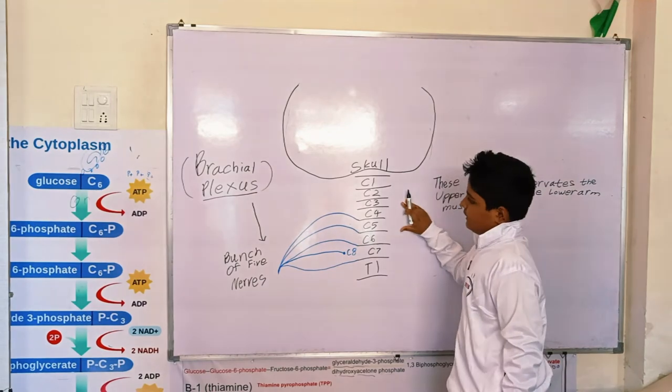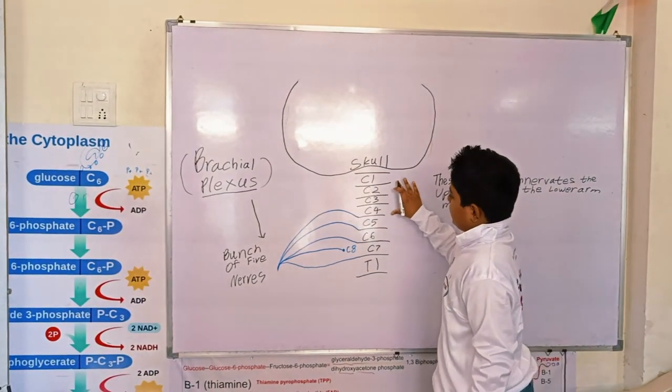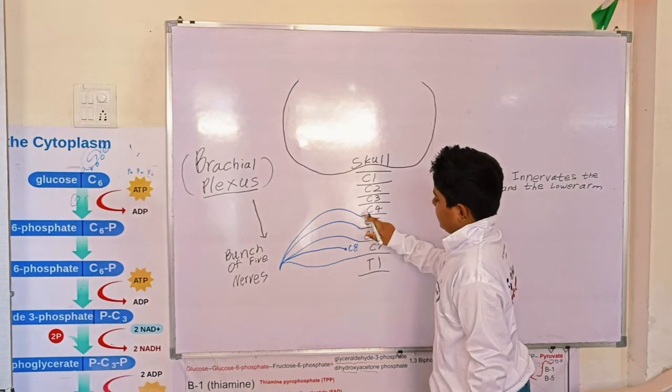So now we have learned what is brachial plexus. Now we are going to learn what damage is done to these nerves.